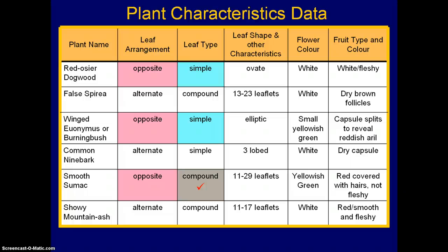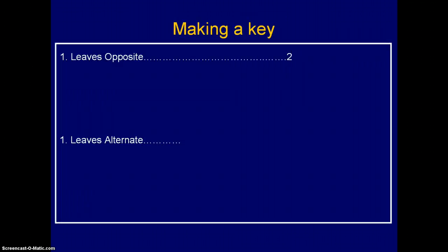If we go back to our table of information, we realize that we actually had three different plants with leaves opposite, so we had to break it down a little further before we could differentiate and distinguish them from each other. We found that if we went to leaf type, there was one that has opposite compound and two that had opposite simple. For the one that's opposite compound, we know we basically can't go any further — it's unique. There's only one like this, so that will be built into the key right away so we can identify it. The two opposite simple plants, we still have to go further.